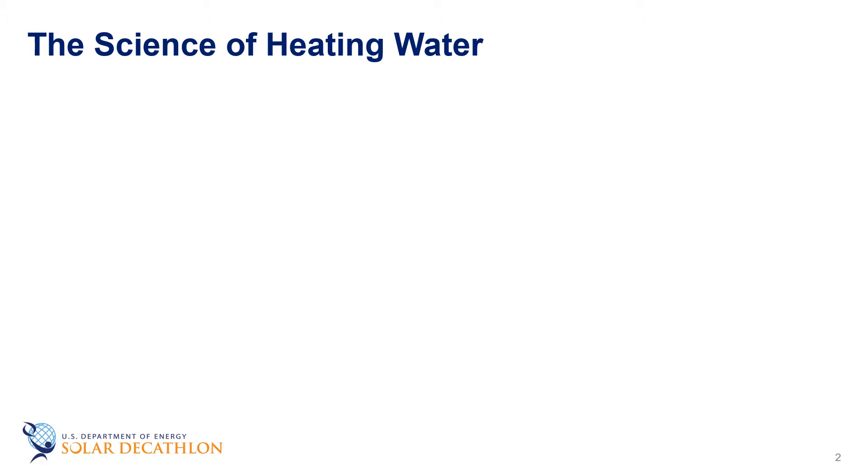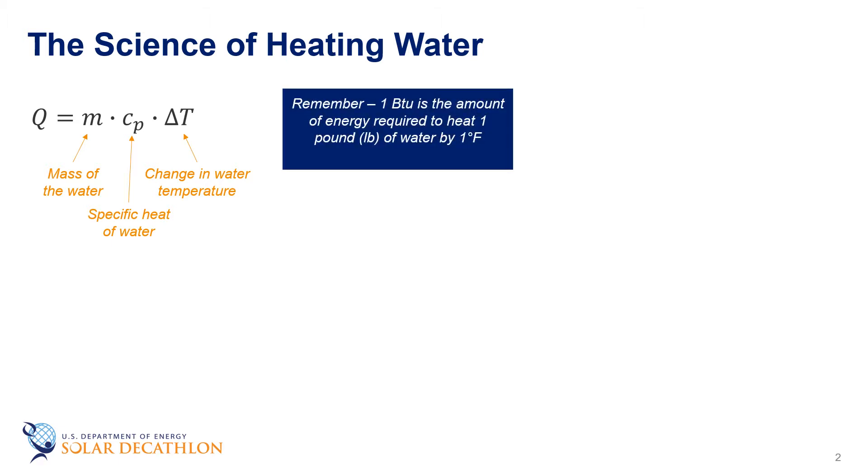The amount of energy required to heat hot water is Q = m · cp · ΔT, or the mass of the water times the specific heat of the water times the change in the temperature of the water. On a basic level we can relate this to the definition of a British thermal unit. The amount of energy to heat one pound of water one degree Fahrenheit is the BTU.